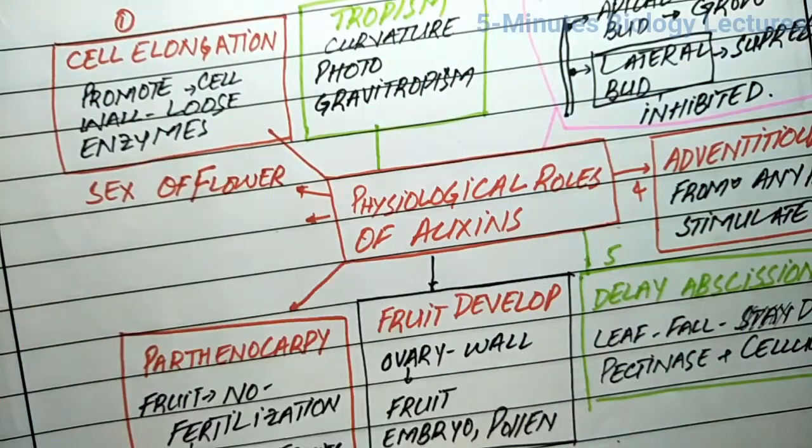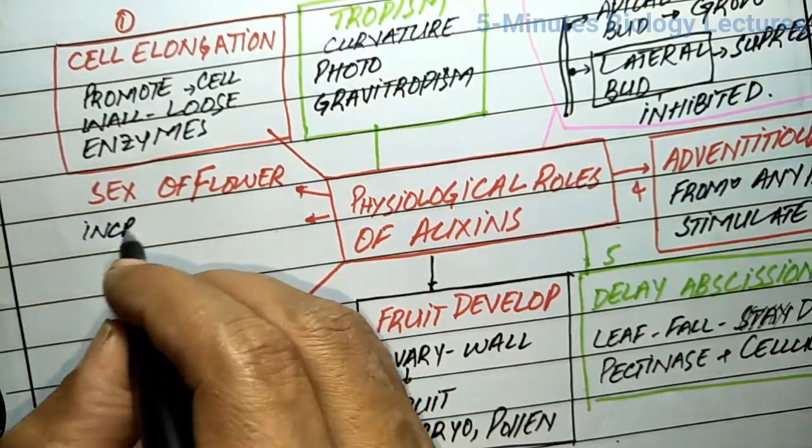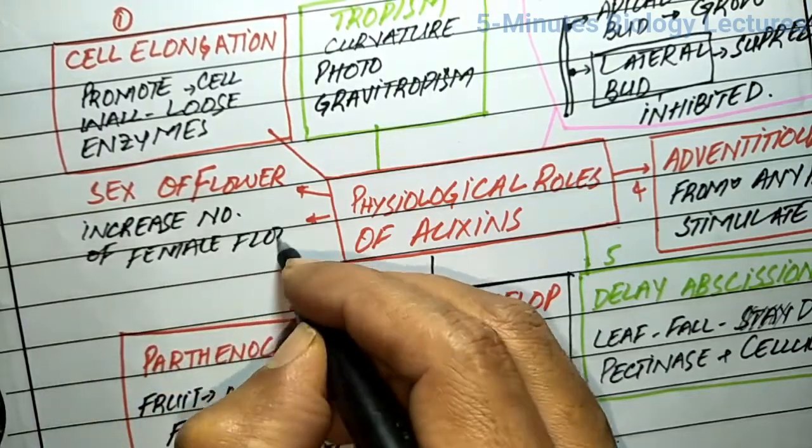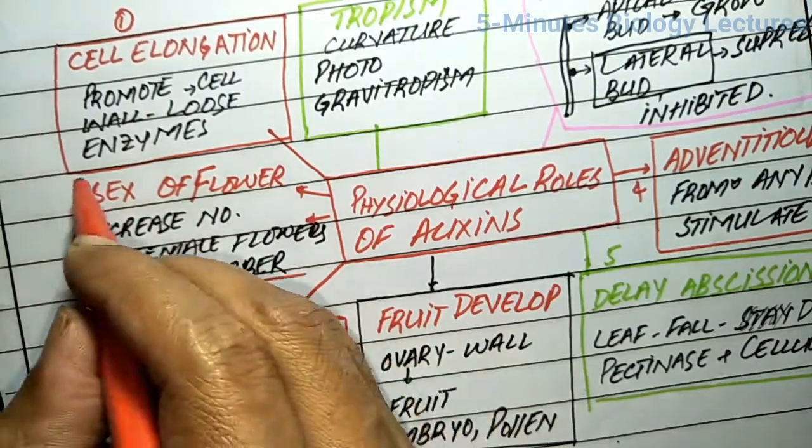Auxins have a feminizing effect on some plants. In cucumber, both male and female flowers are borne on the same plant. That is why it is called monoecious. Application of auxins increases the number of female flowers to produce more cucumbers.